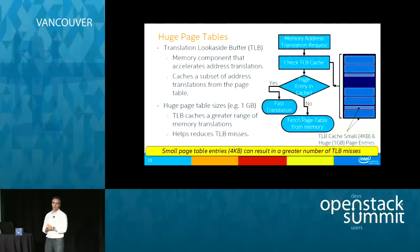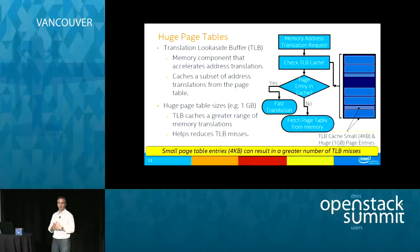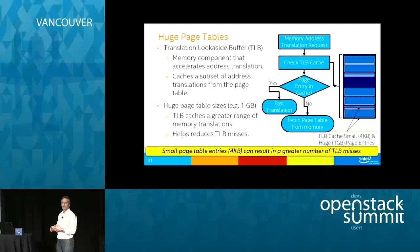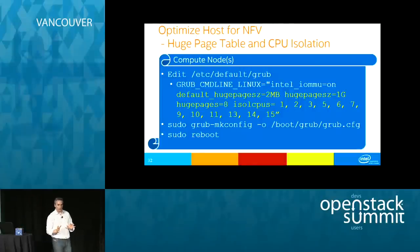Huge page table support was upstreamed in Kilo. The Translation Lookaside Buffer, or TLB, caches page translation entries for address translation. Using huge pages — 2 MB or 1 GB in size — means the fixed number of TLB cache entries spans far more of the memory address space. During virtual machine address translations, the likelihood of a TLB cache hit is improved, yielding much faster address translation, which is important for NFV workloads.